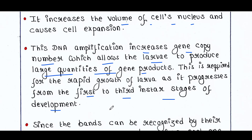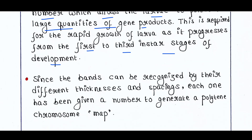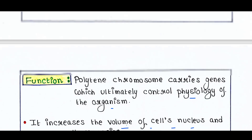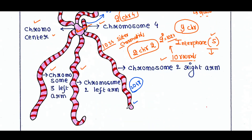Since the bands can be recognized by their different thicknesses and spacings, each one has been given a number to generate a polytene chromosome map. This is very important if you want to study Drosophila genetics or DNA structure. The bands are not uniform — each has a particular thickness and the interband space also varies. You can number these bands 1, 2, 3, and in this way make a very useful chromosome map.